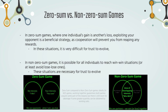In zero-sum game situations, there is almost no way for both players to benefit at the same time, so it's very difficult for trust to evolve, as exploitation will always take advantage over cooperation. But in non-zero-sum games, it is possible for all individuals to reach win-win situations, or to at least avoid lose-lose ones. That's why, especially in our modern world, these situations are especially necessary for trust to evolve.